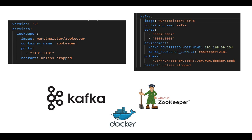I'll show you this in Visual Studio Code and we'll use it on our Docker system. You can see there are two services — one for Zookeeper and one for Kafka. We're using the appropriate image for each service, giving the container names 'zookeeper' and 'kafka', and opening ports 2181 for Zookeeper and 9092 and 9093 for Kafka, along with environment variables and a restart policy of 'unless stopped'.